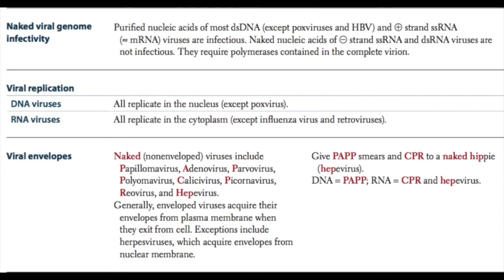Viruses without envelopes are referred to as naked viruses. There are seven naked virus families: calicivirus, coronavirus, reovirus, parvovirus, adenovirus, papillomavirus, and polyomavirus. You can remember this with the mnemonic 'naked CPR and pap smear.' Generally, enveloped viruses acquire their envelopes from the plasma membrane when they exit the cell. The exception is herpesviruses, which acquire their envelopes from the nuclear membrane.